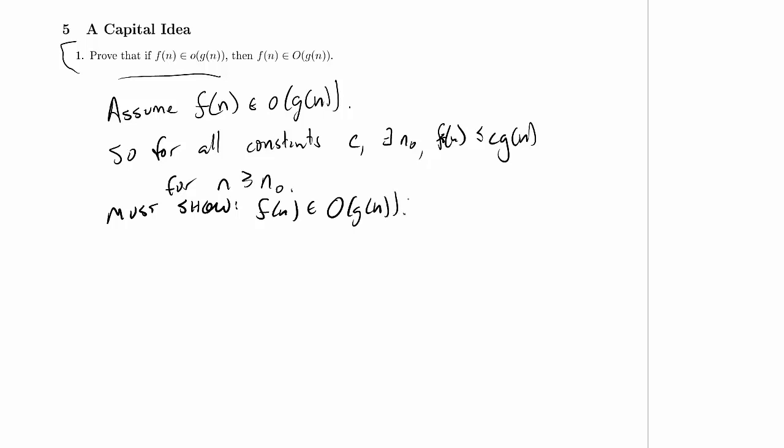We just need to pick a constant and an n0. We already know for all constants there is an n0, so we can say let c_O (this is the big O c, it's not the same c as the little o one) be one.